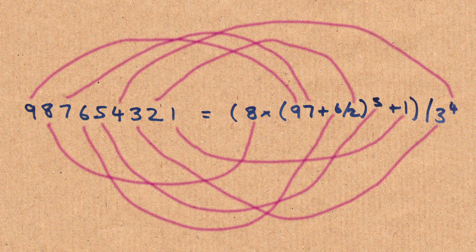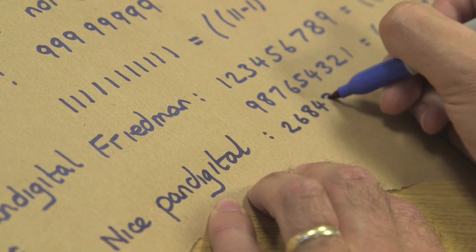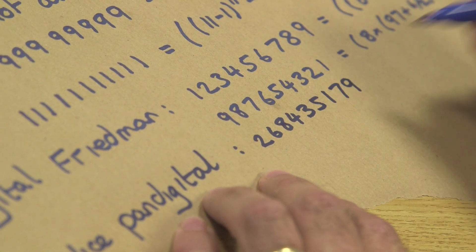You might say, is it easy to get a nice pan-digital number? And indeed, they're there, but they're not that easy to get. There is one here: 268435179.